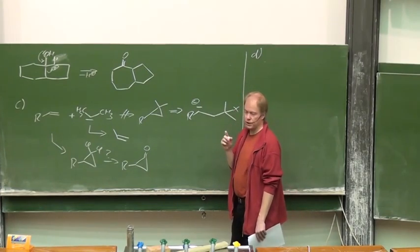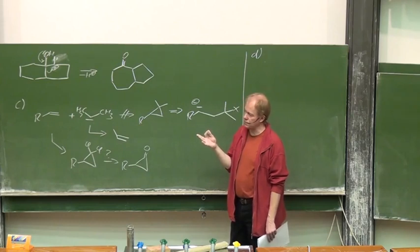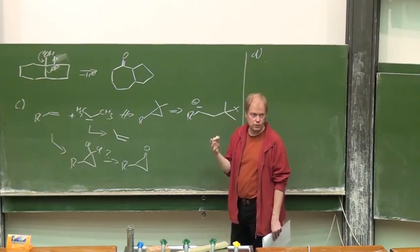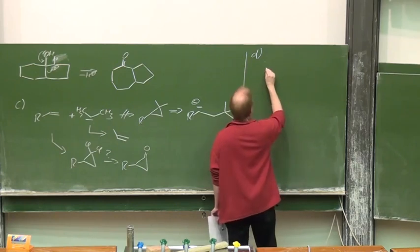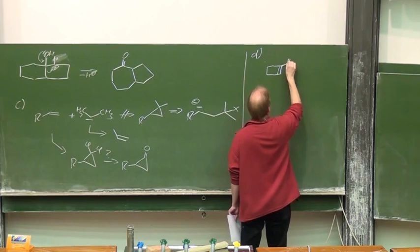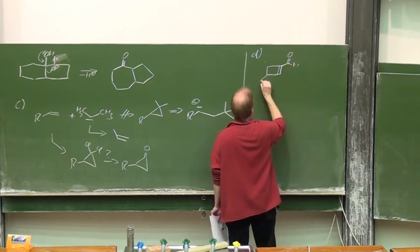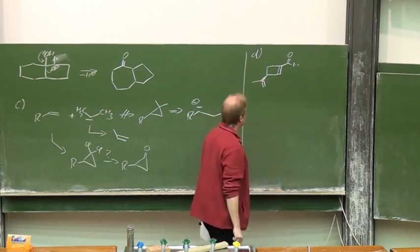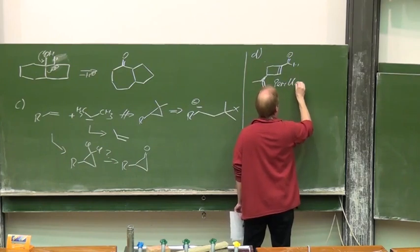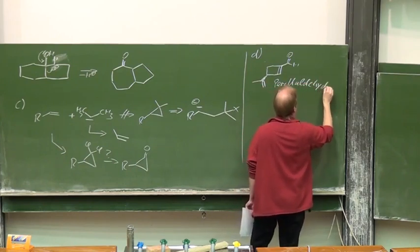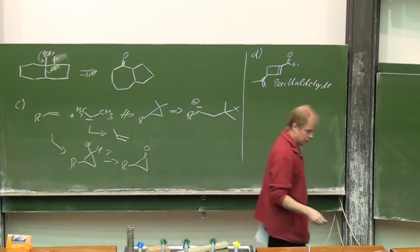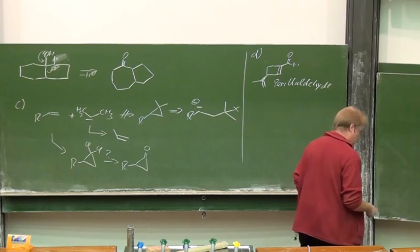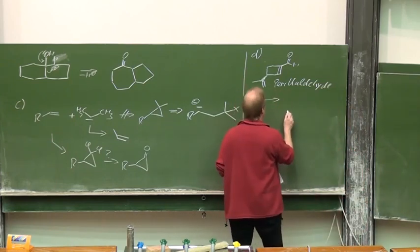Now, we already noticed that we have five adjacent stereogenic centers. That led us to the idea let's look for chiral starting material from the chiral pool. And here we have such a structure. This aldehyde, this is a terpenoid called perillaldehyde.